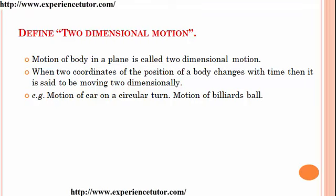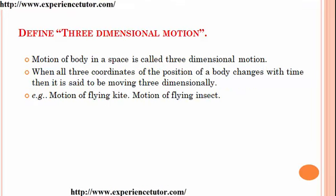Motion of a body in a plane is called two-dimensional motion. When two coordinates of the position of a body change with time, it is said to be moving two-dimensionally. Examples include motion of a car on a circular turn and motion of a billiards ball. Motion of a body in space is called three-dimensional motion. When all three coordinates change with time, it is said to be moving three-dimensionally. Examples include motion of a flying kite and motion of a flying insect.